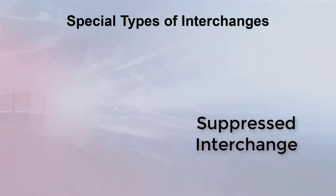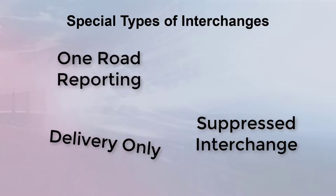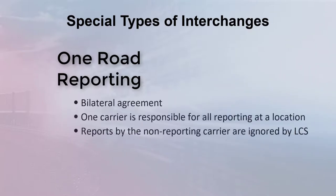Even though there are common carriers, there is nothing common about car hire accounting, and thus we have special types of interchange agreements. All of these special arrangements are bilateral, which means that both carriers must agree to the implementation. One of these arrangements is one road reporting, which allows one carrier to report all interchange activity at one location. In one road reporting situations, only the interchanges reported by the designated reporting carrier are considered by LCS. One road reporting reports are considered to be more accurate. This was much more popular when interchange reporting involved significant clerical resources. However, now that reports can be generated electronically, one road reporting relationships have become less popular.